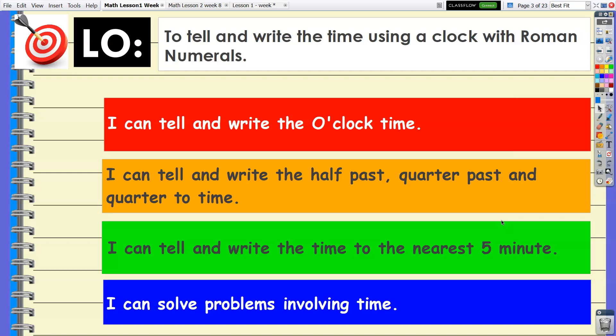Our learning objective for today is to tell and write the time using a clock with Roman numerals. Success criteria: I can tell and write the o'clock time, I can tell and write the half past, quarter past, and quarter to time, I can tell and write the time to the nearest five minutes, and I can solve problems involving time.